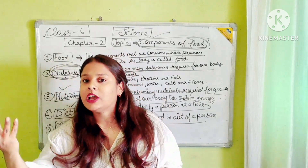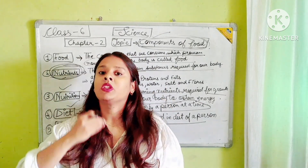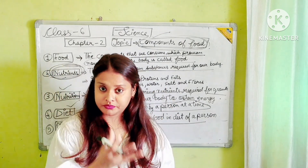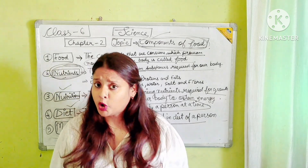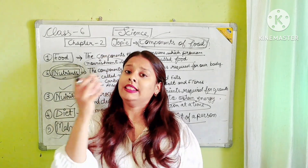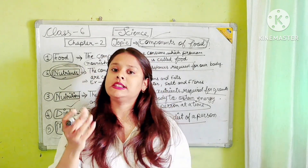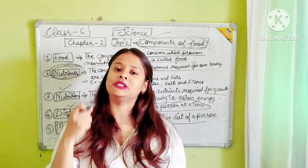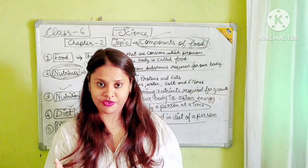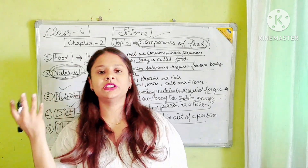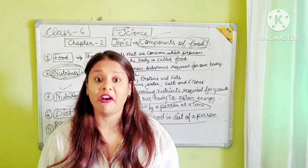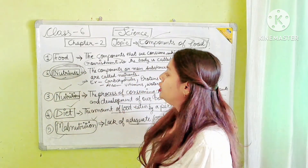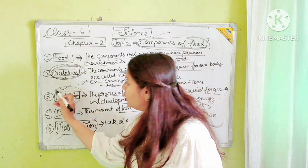What are the types of nutrients? Carbohydrates, fats, proteins, and it also contains vitamins, minerals, and dietary fibers. Dietary fiber is also called roughage. So all of these are our nutrients.